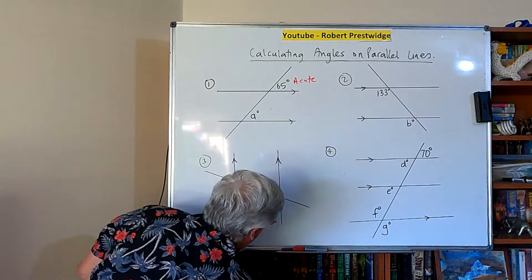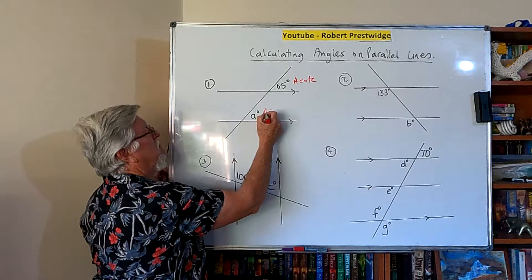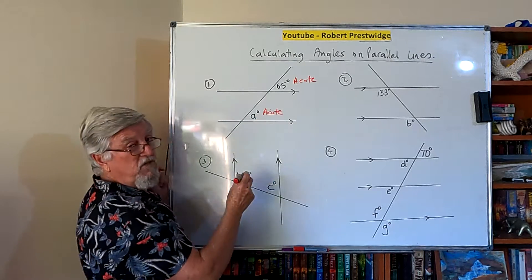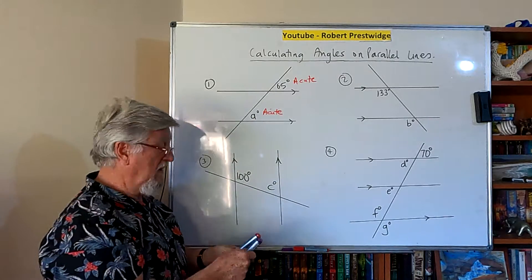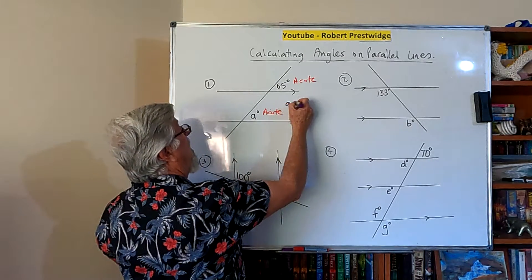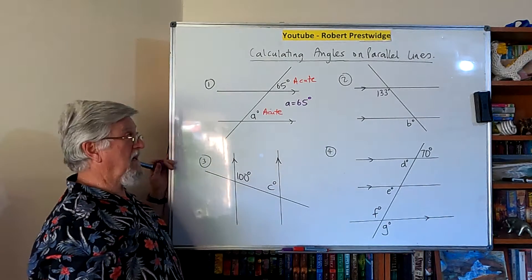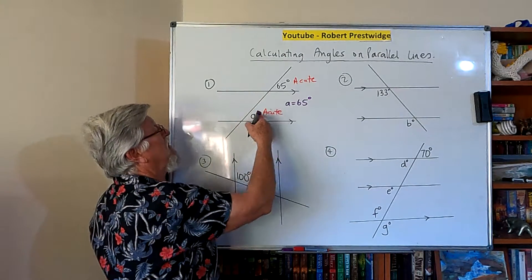So if that one there is acute, you can see also that this one down here is acute. And there's one simple rule with these things. If they're both acute, they're both the same answer. So I can just go that A equals 65 degrees. Don't need to calculate it. Don't need to think about it. They're just the same.